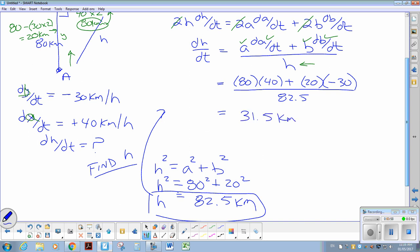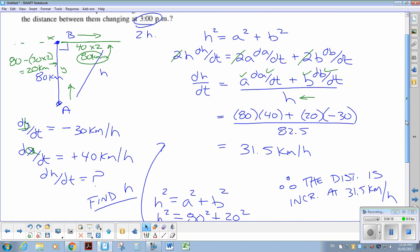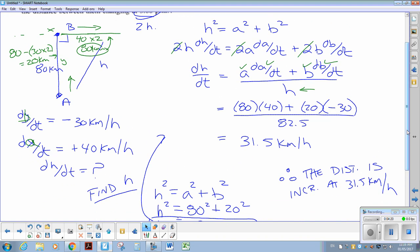Let's call it 31.5 kilometers per hour. So therefore, the distance is, because it's a positive, is increasing at 31.5 kilometers each hour at that specific point in time. If you have any questions with number 13, let me know, and I'll try to clear them up for you.